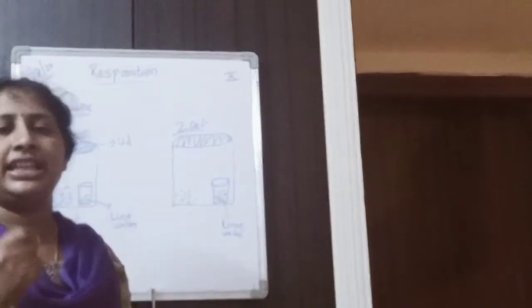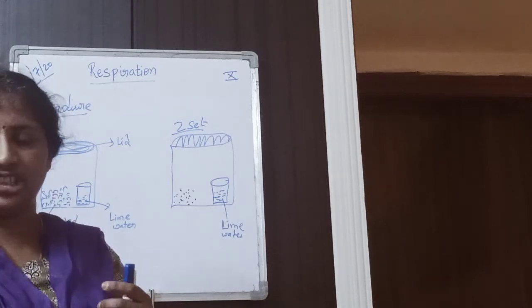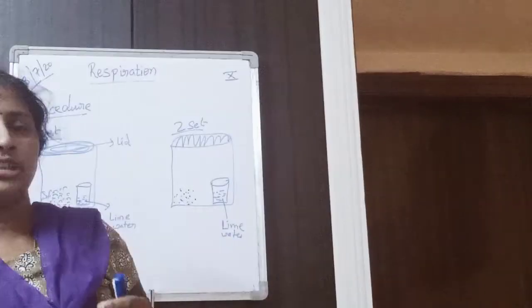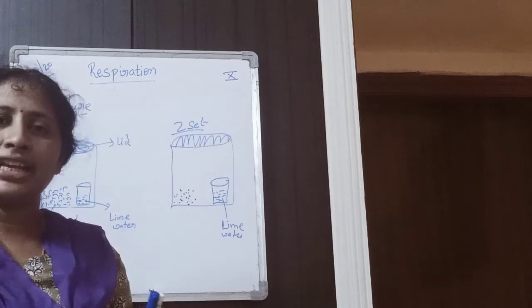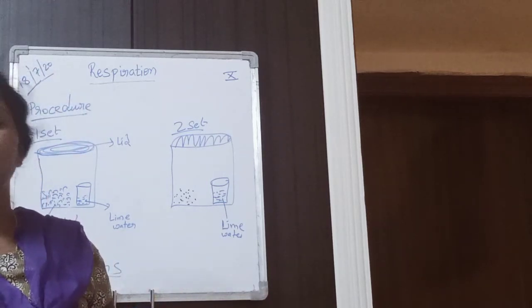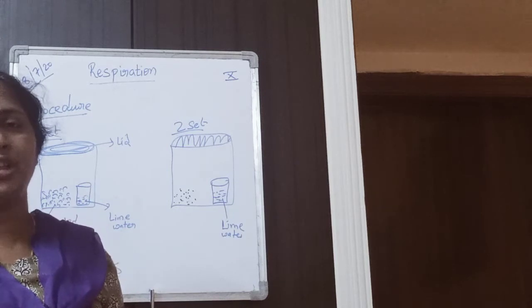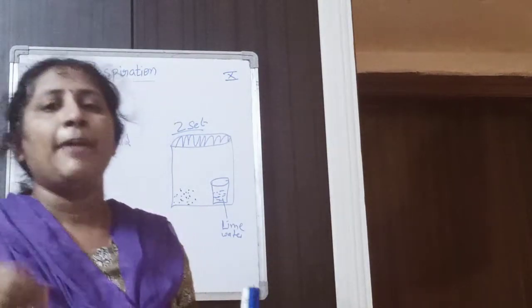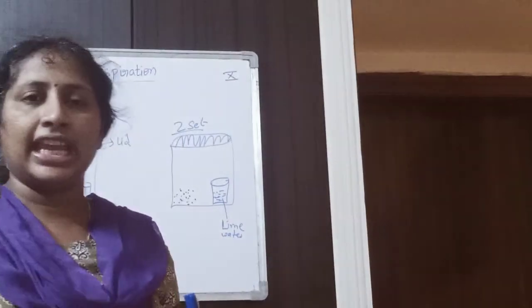So oxygen will release carbon dioxide. Release carbon dioxide which lime water will be absorbed in the beaker, changing into milky colour. Respiration is starting here. This experiment proves that plants do respiration. Then carbon dioxide will release - inhale oxygen and exhale carbon dioxide.